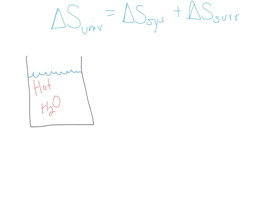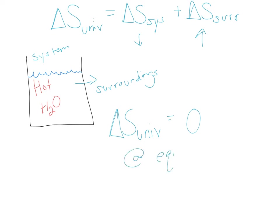Going back to our hot water example: heat is leaving our system and going into our surroundings. The delta S of our system is decreasing while the delta S of our surroundings is increasing. What if those are the same magnitudes? If the delta S of your universe is equal to zero, you're at equilibrium — there's no driving force going one way or the other, and the process is neither spontaneous nor non-spontaneous. It is simply at equilibrium.